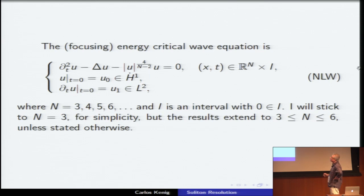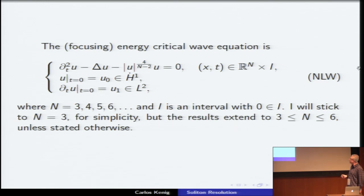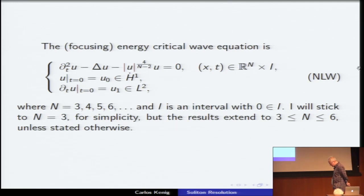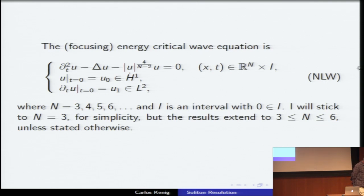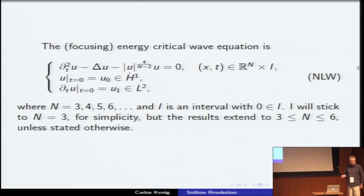I have focusing here — I will explain what that means. It's the standard linear wave equation minus a nonlinearity, a semilinear nonlinearity which has a specific power attached to it. The data is supposed to be in the space Ḣ¹, which is simply the space of functions with a gradient in L², and then the time derivative is just supposed to be in L². The dimension is 3, 4, 5, and so on. This nonlinear wave equation was devised as a model to approximate geometric problems like the wave map problem, and eventually the Einstein equations. In this lecture I will stick to the three-dimensional case, but the results extend to other dimensions too.